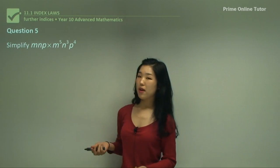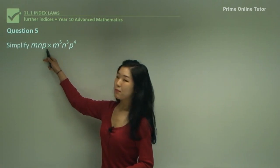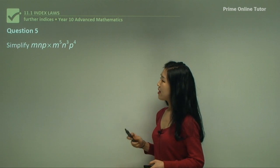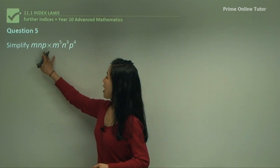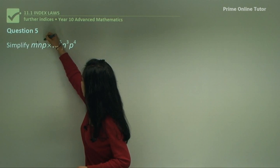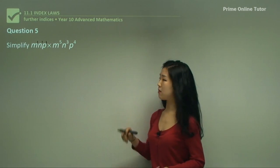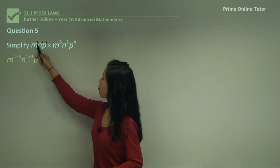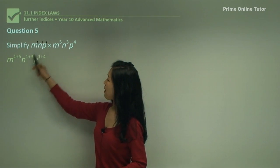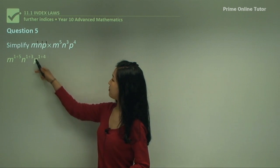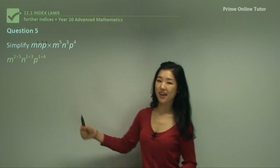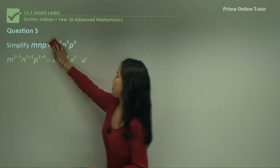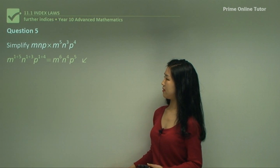Question five. This time we have three different bases: m, n, and p. Just do the usual — match the ones with the same base. m, n, and p each have an index of 1 where nothing is written. So m to the power of 1 plus 5, n to the power of 1 plus 3, and p to the power of 1 plus 4. Then just simplify. After five of these questions you should be getting quicker and quicker.